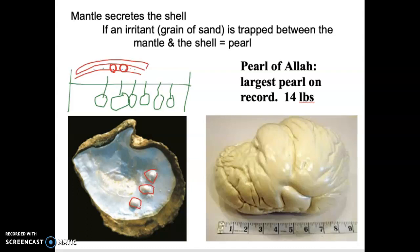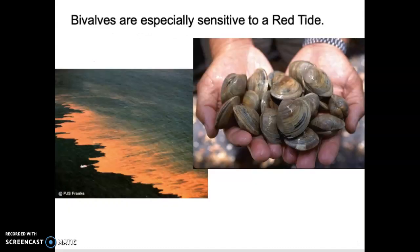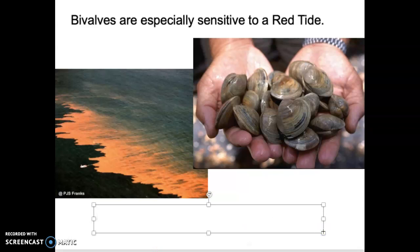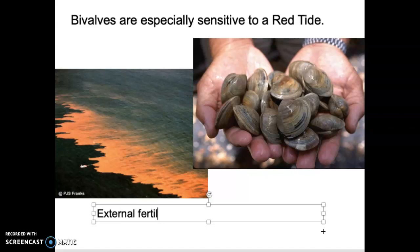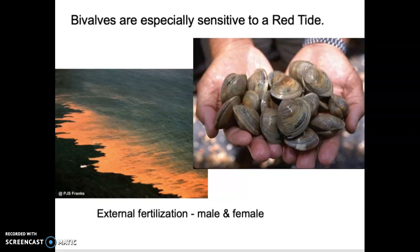To summarize bivalves: the double shell, they tend to lack the radula, the foot is mostly used for digging and burrowing, and because of how they filter feed, they are especially sensitive to red tide. Reproduction is external fertilization — there are male and female members in bivalves; we don't see hermaphroditic individuals.